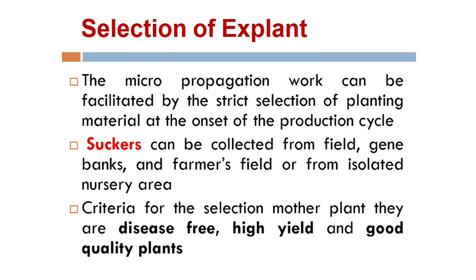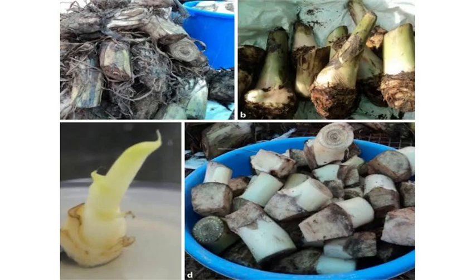Let us see the micropropagation techniques in banana plants. First, the process is the selection of the explant. The micropropagation work can be facilitated by strict selection of planting material at the onset of the production cycle. Suckers can be collected from field conditions, gene banks, screen-house fields, or isolated nursery areas, but they should be free from viral infections. Criteria for selection of the mother plant are: disease-free, high yield, and good quality plants.